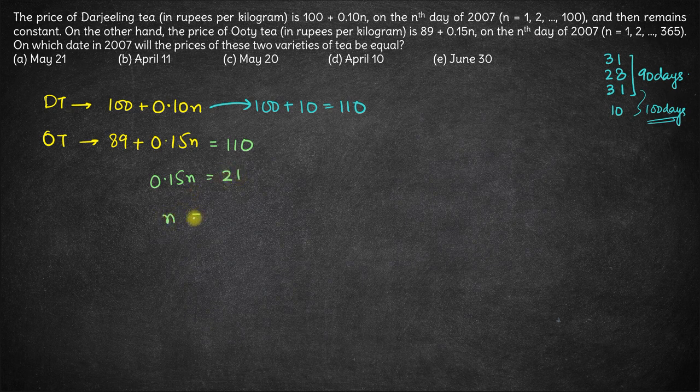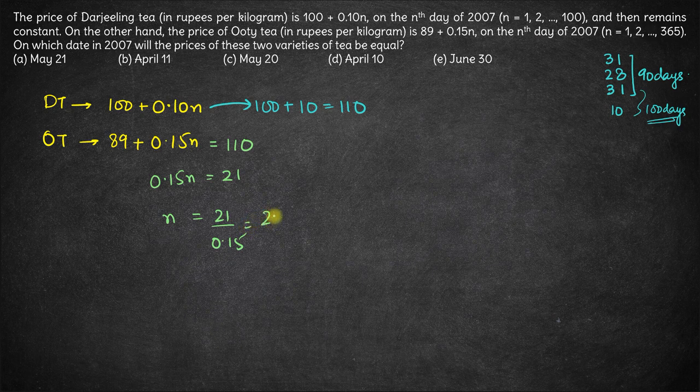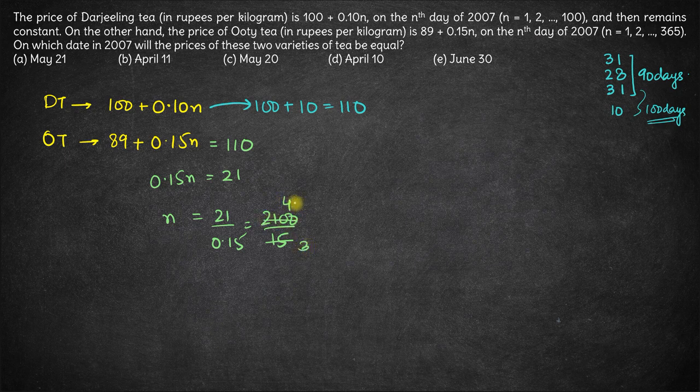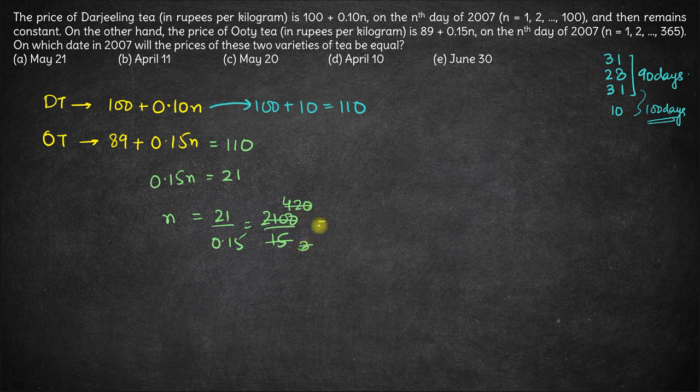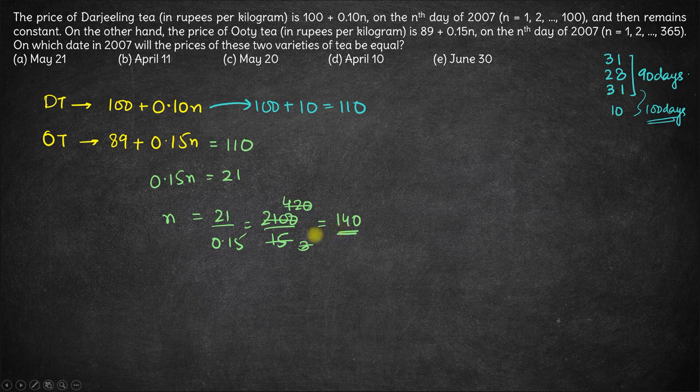So n comes out to be 21 ÷ 0.15 which is 2100 ÷ 15. This goes by 5 three times, this goes by 5 four 20 times, 420 goes by 3 one 140 times. So n here is 140 days.